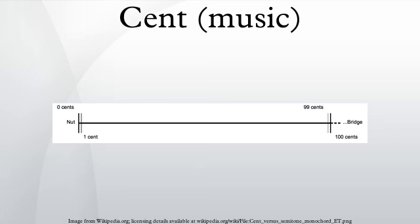An equally tempered semitone spans 100 cents by definition. An octave, two notes that have a frequency ratio of 2 to 1, spans 12 semitones and therefore 1200 cents.